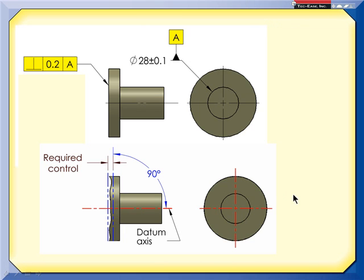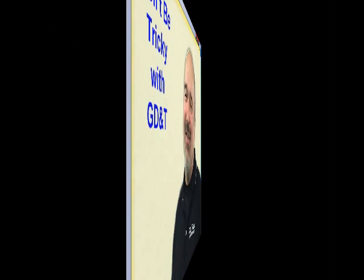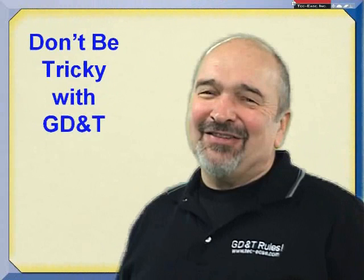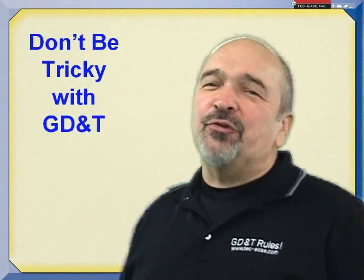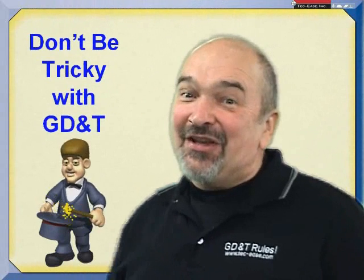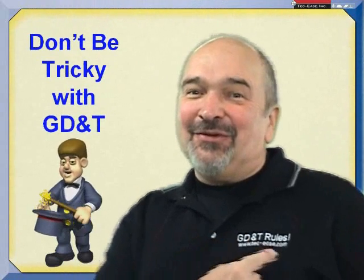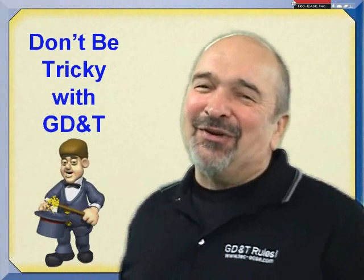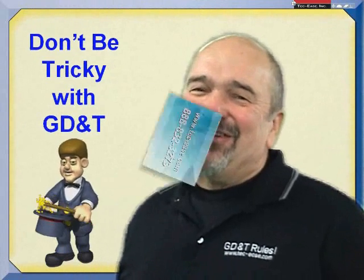In this particular case, I wanted to control the feature's perpendicularity, so why not just say perpendicular to the datum established by datum feature A? Save the tricks for your next magic show, and remember: at Techies, GD&T rules. I'll see you next month.